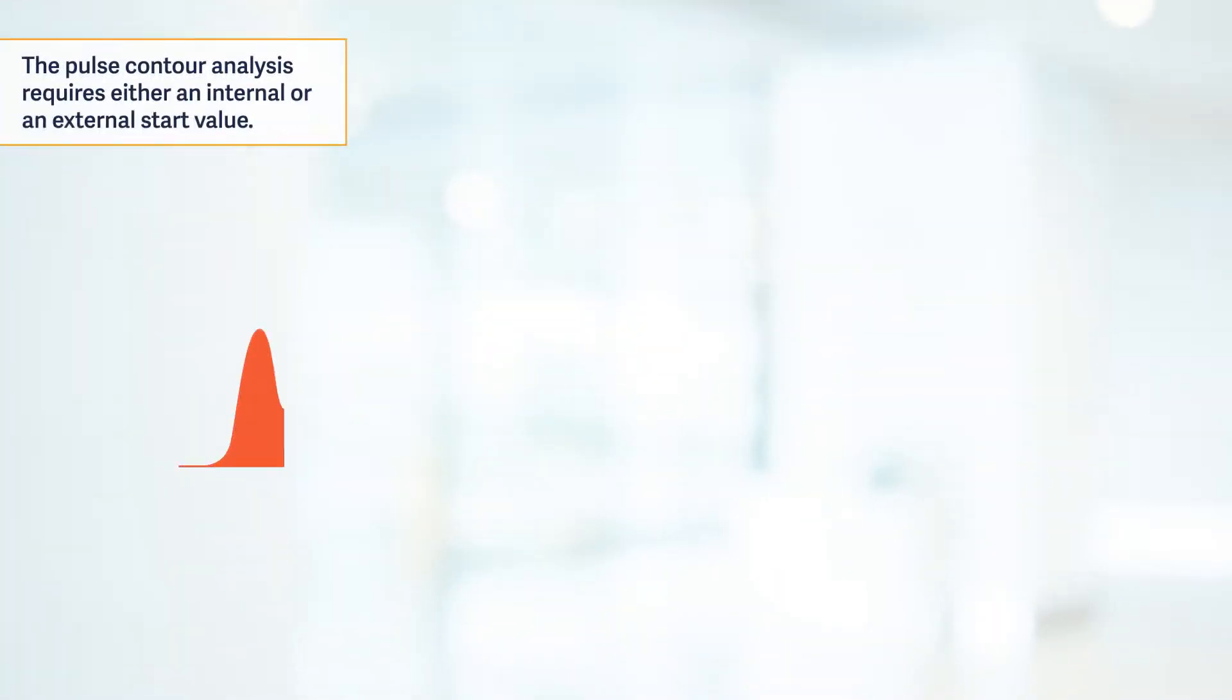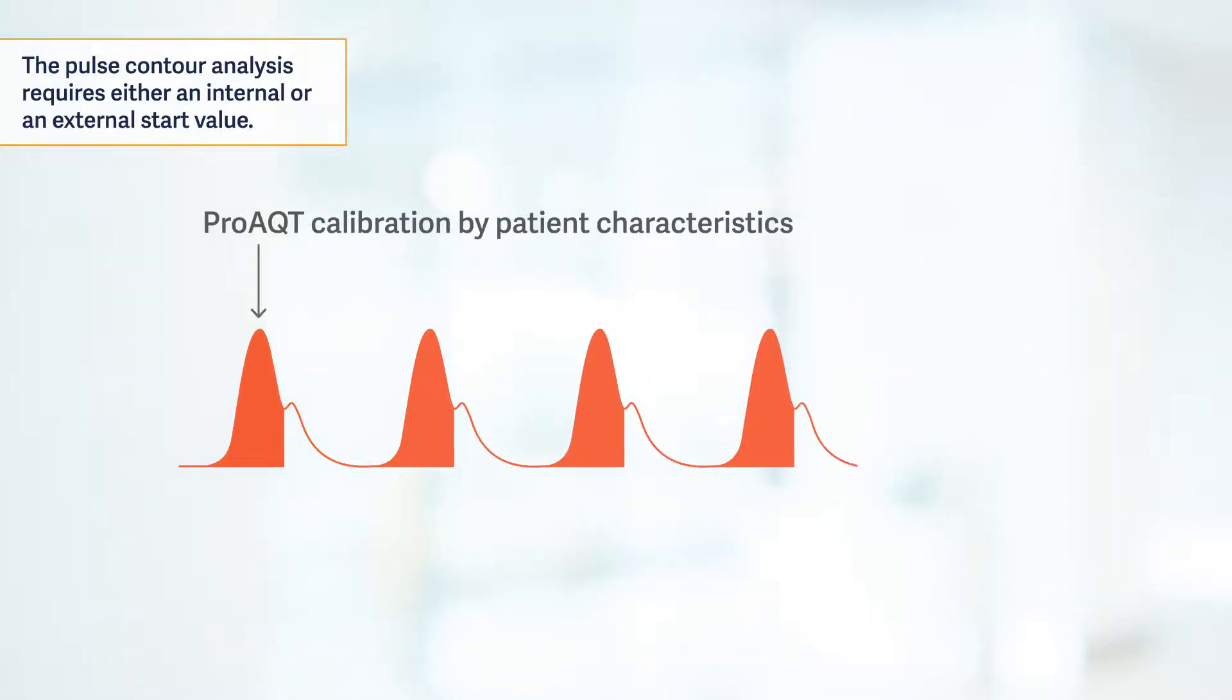Note that the pulse contour analysis requires an internal start value based on the patient characteristics and details of the arterial pressure curve or an optional input of an external start value, such as a measured CI value from an external source, for example echocardiography.